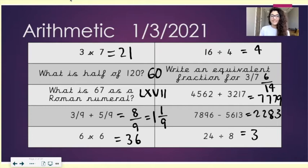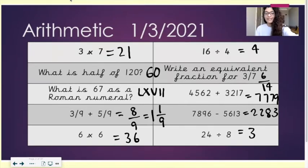What is 67 as a Roman numeral? LXVII. 3 ninths plus 5 ninths equals 8 ninths, also known as 1 and 1 ninths.